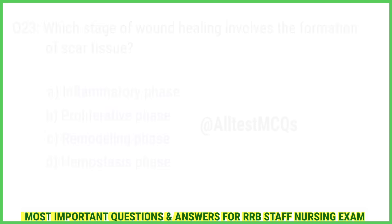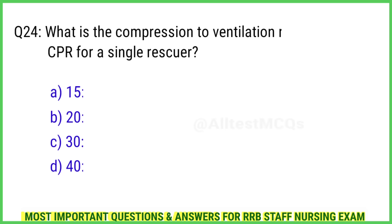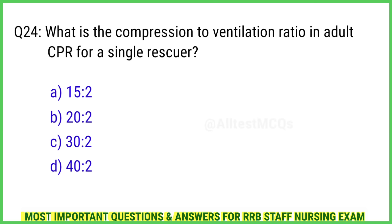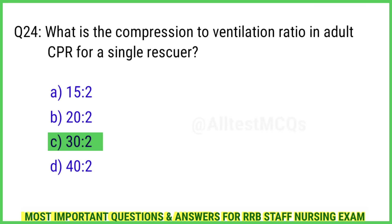Question 24. What is the compression to ventilation ratio in adult CPR for a single rescuer? The right answer is Option C: 30 to 2.